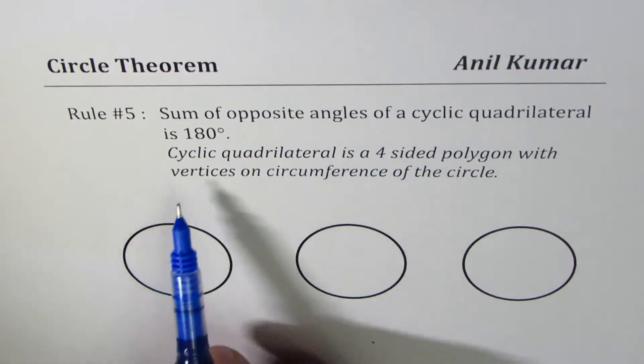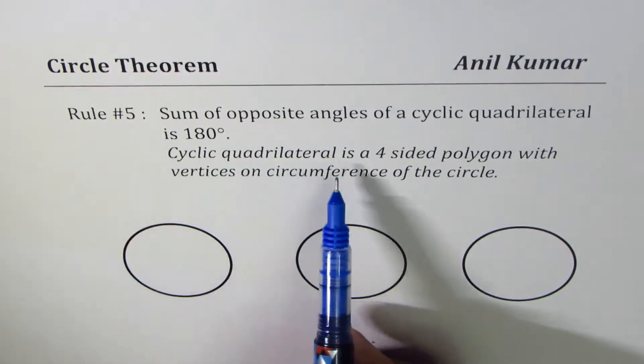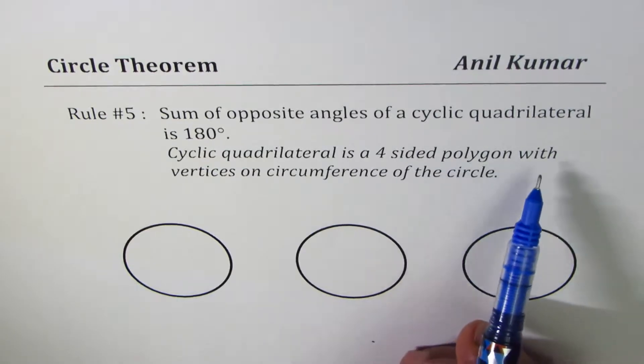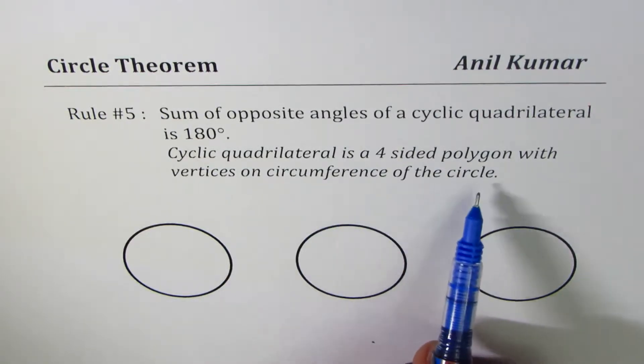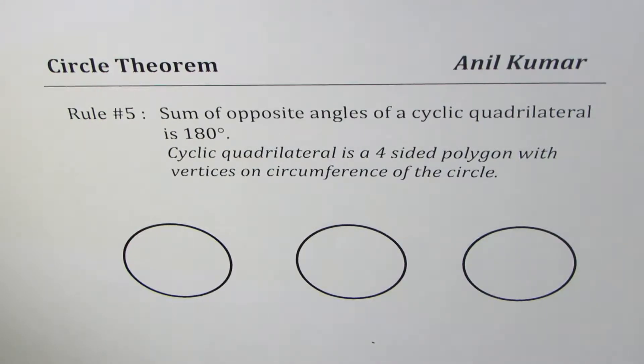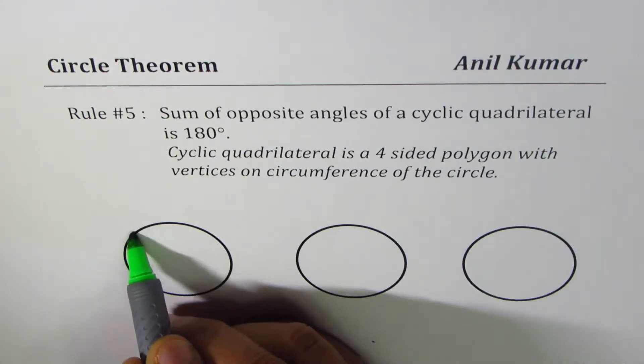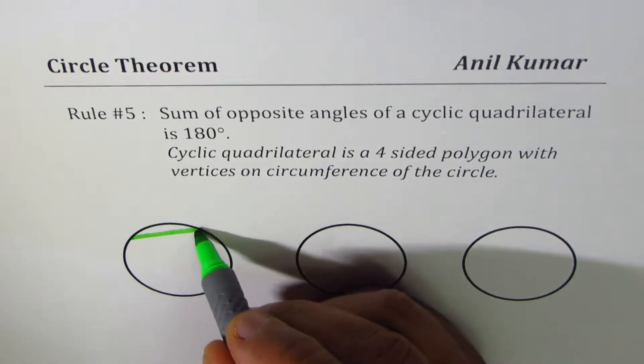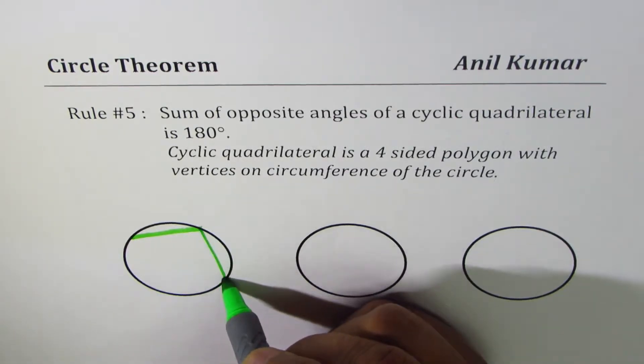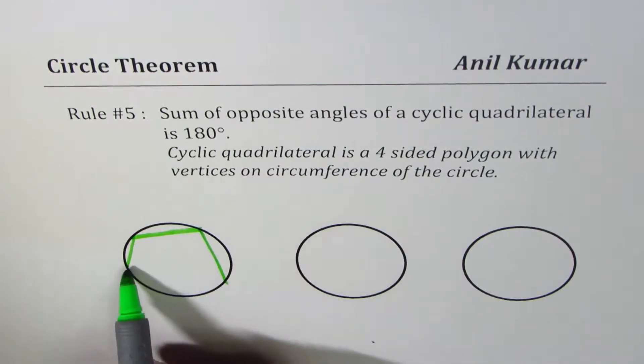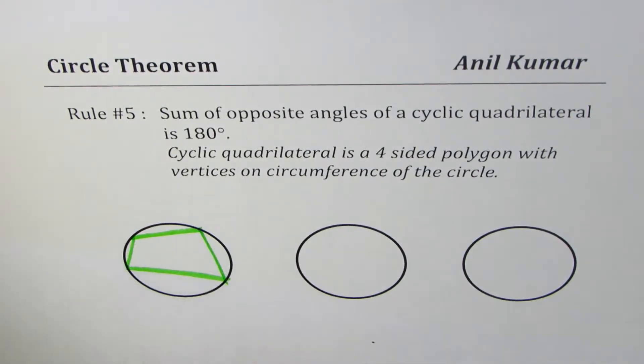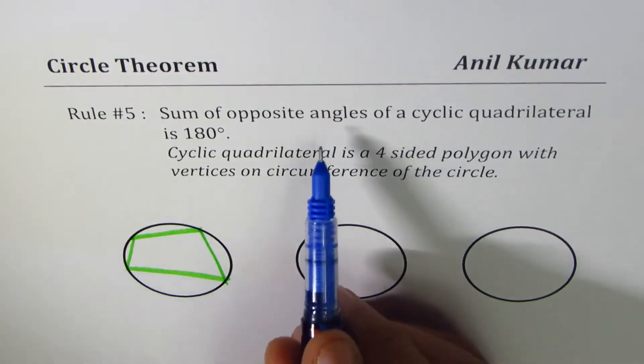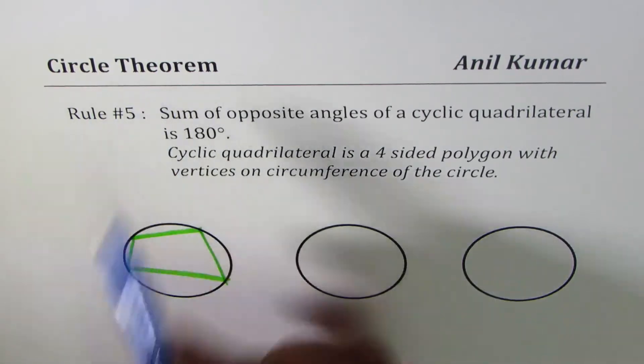What is a cyclic quadrilateral? A cyclic quadrilateral is a four-sided polygon with vertices on the circumference of the circle. That is to say, if I take four points on the circle and join them, we get a quadrilateral, a four-sided figure.